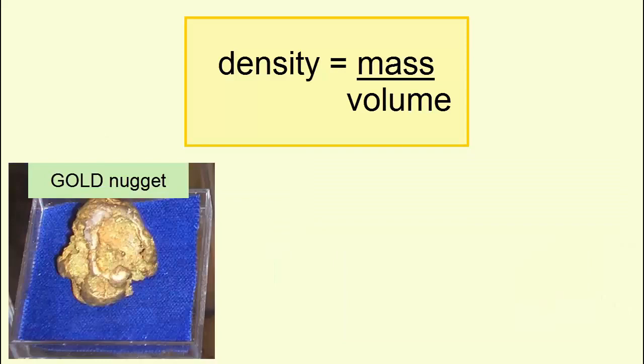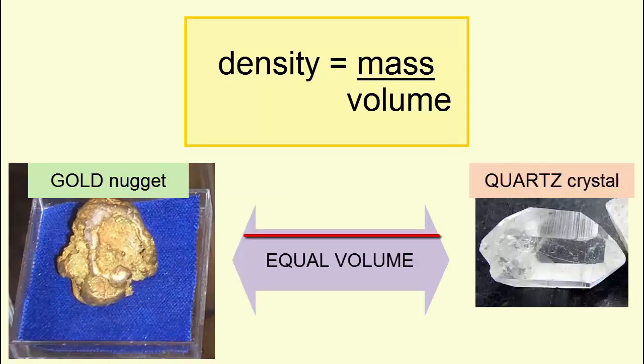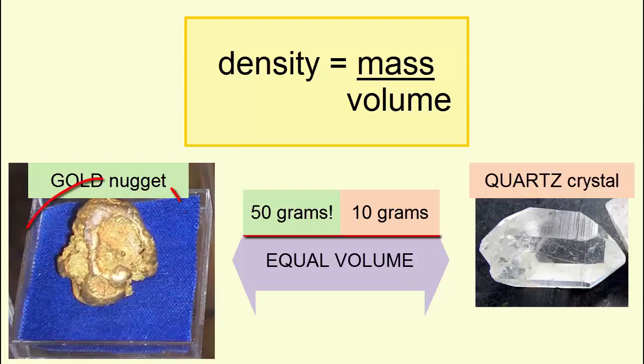For example, here's a gold nugget that is the same volume as this quartz crystal. Which is densest? Because the gold nugget is almost five times more massive for the same volume, it's denser.